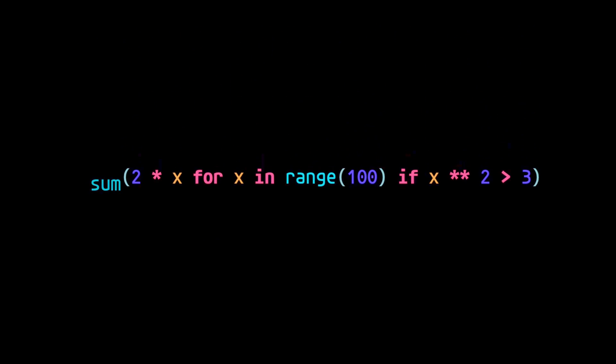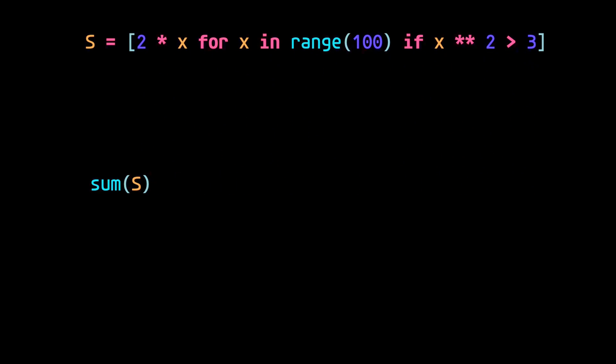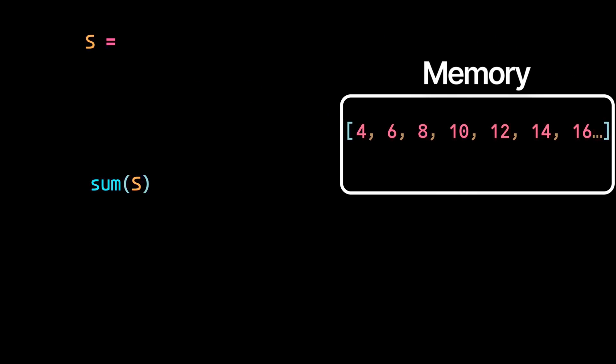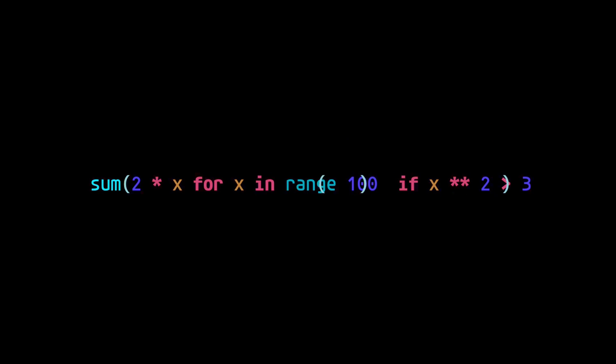So going back to the sum example, let's say we want to get the sum of the list produced by the original list comprehension. As mentioned before, first we'd need to create this list in memory. Then sum would iterate over each value and add it to the sum that we'd eventually print. But if we use a generator expression, we don't need to store that list in memory. Sum can just iterate over each value which is generated on the fly. Until eventually the generator reaches the end, at which point it would inform the caller, the sum function in this case, of a stop iteration. Which is just a fancy way of saying that the generator no longer has any values to generate.